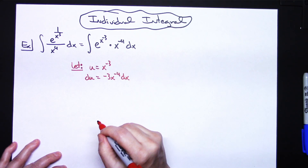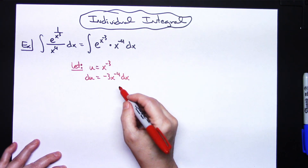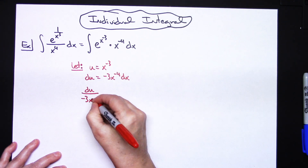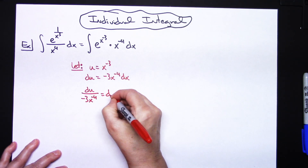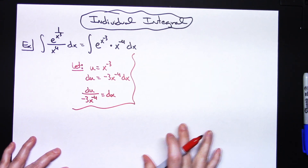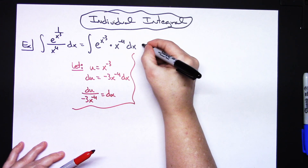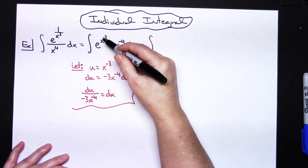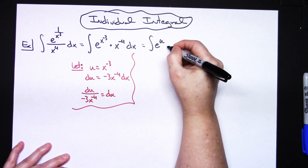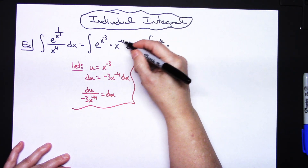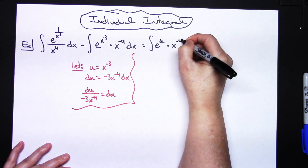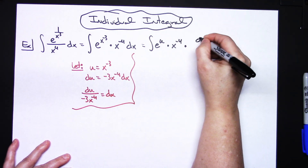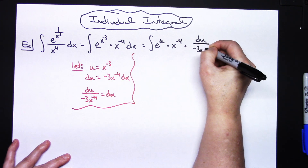Since I've got that x to the negative 4 sitting there, I'll go ahead and solve all the way down for dx, so I'll have dx equals du over negative 3x to the negative 4. Then I'm going to start substituting. I'll write the integral with e to the u, keeping the x to the negative 4, and replacing dx with du over negative 3x to the negative 4.